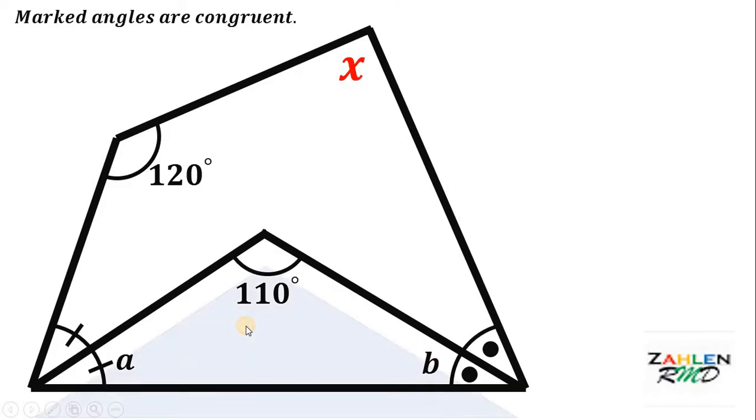Now, let's consider this triangle. We know that the sum of all angles inside the triangle adds up to 180 degrees. Therefore, if we add a plus b plus 110, it will give us a total of 180 degrees.